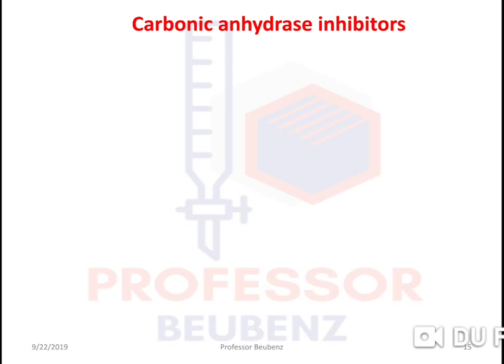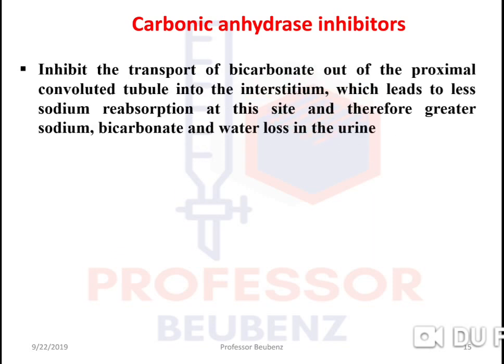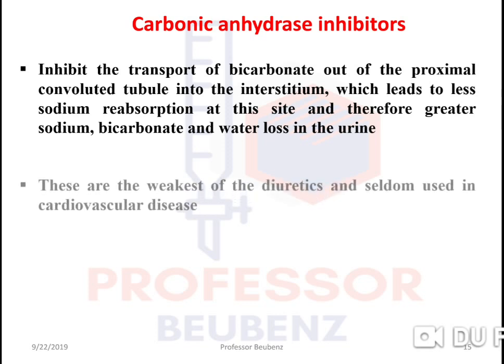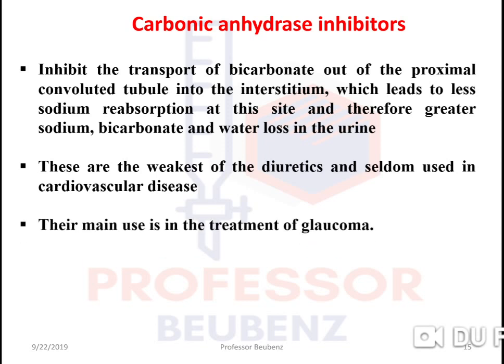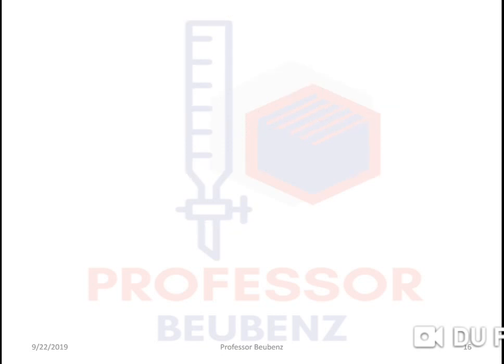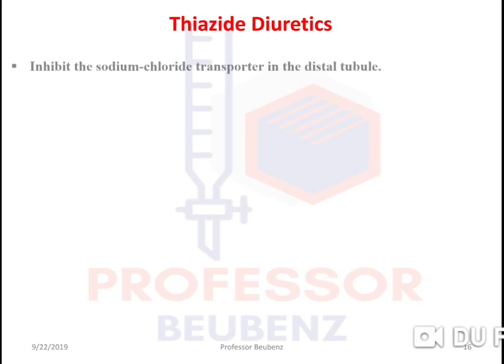Carbonic anhydrase inhibitors: their mechanism of action involves inhibiting the transport of bicarbonate out of the proximal convoluted tubule into the interstitium, which leads to less sodium reabsorption and therefore greater sodium bicarbonate and water loss in the urine. These are the weakest diuretics and are seldom used in cardiovascular disease. Their main use is in the treatment of glaucoma.